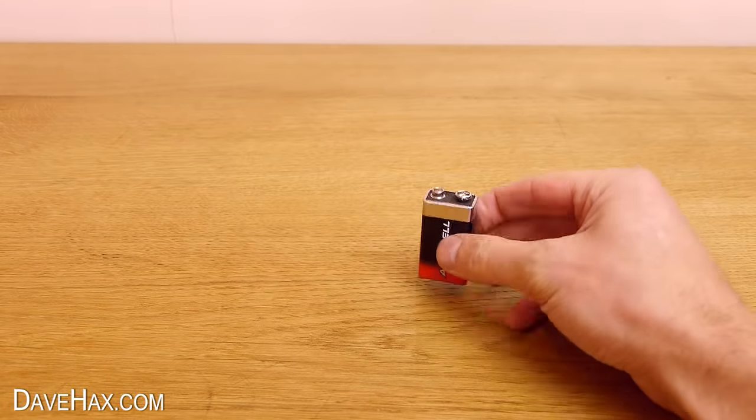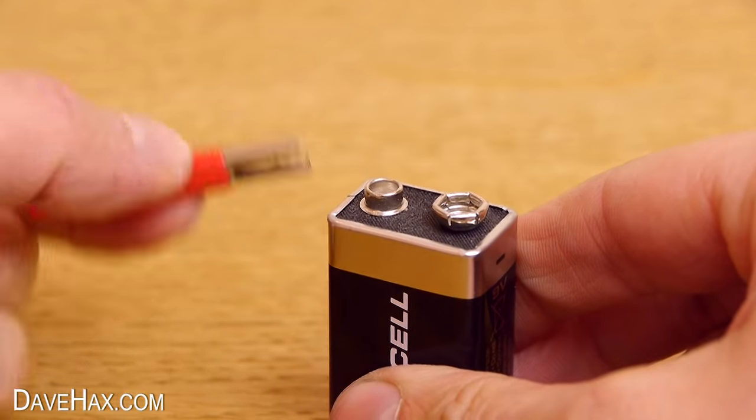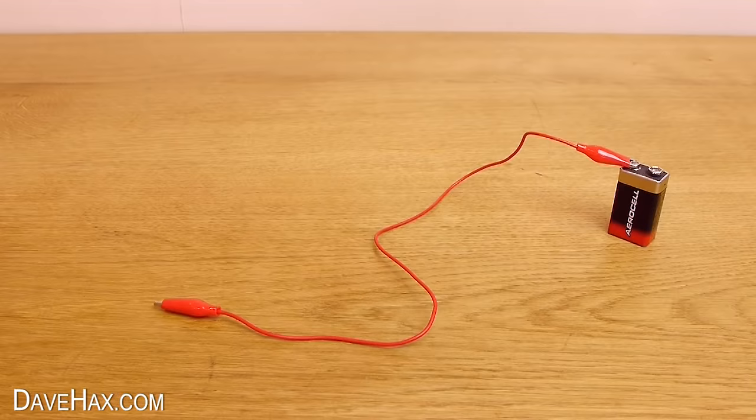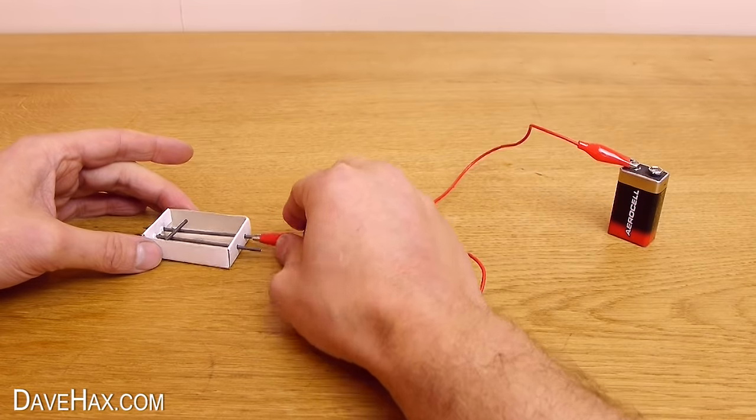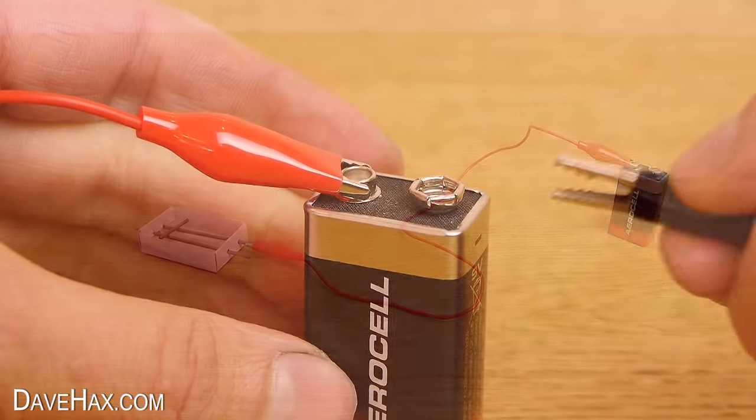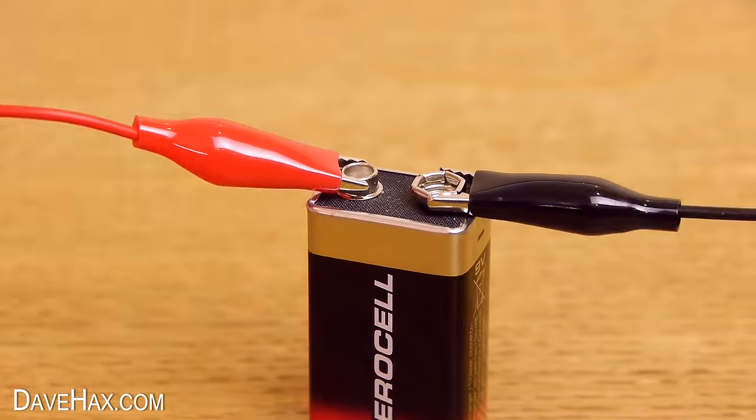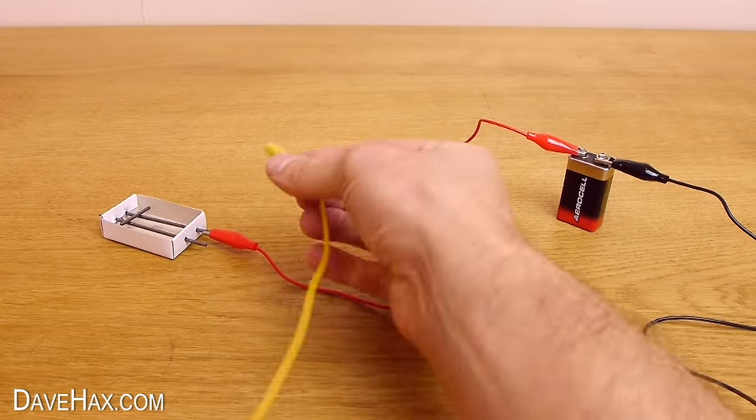Start by taking one of these batteries and connect a lead to it with a crocodile clip. Then, connect the other end to one of the leads on your microphone. Connect another lead to your battery, and a third lead to the other lead on the microphone.